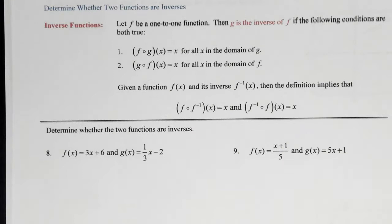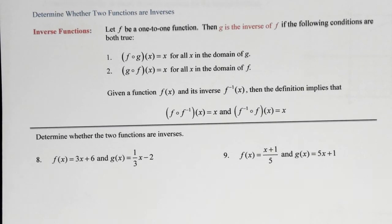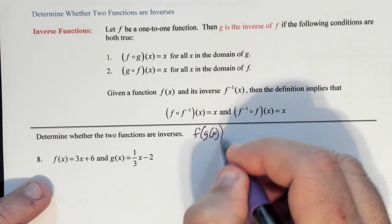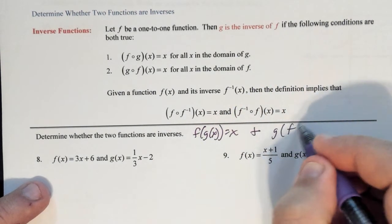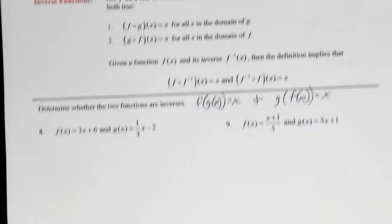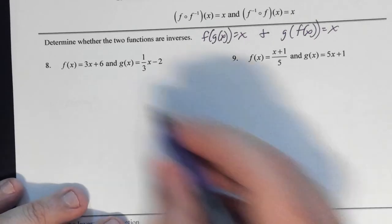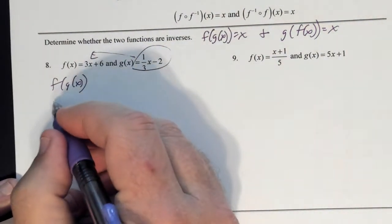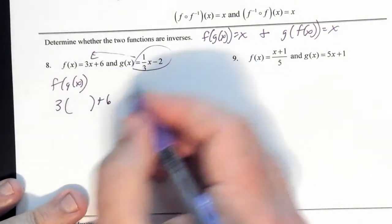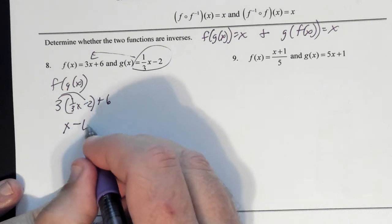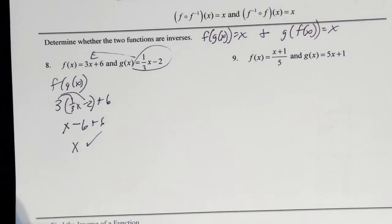On page two, we look at how to tell whether two functions are inverses using compositions — something from Algebra 2. If f(g(x)) = x and g(f(x)) = x, then they are inverses of each other. For example, taking f of g of x: substitute g(x) into f, distribute, and you get x − 6 + 6 = x. That's what we want.